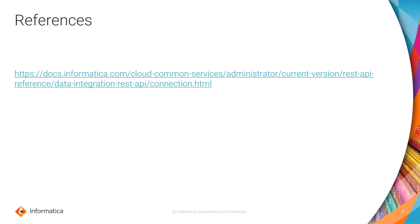We saw a few examples in the demo of how to use the Connection REST API. If you want to see more, you can visit the documentation at the link shown. There you can find examples of how to call connections by name — we used ID in the demo — as well as how to delete and update connections. I hope the demo gives you a good guide for using the information in the documentation.